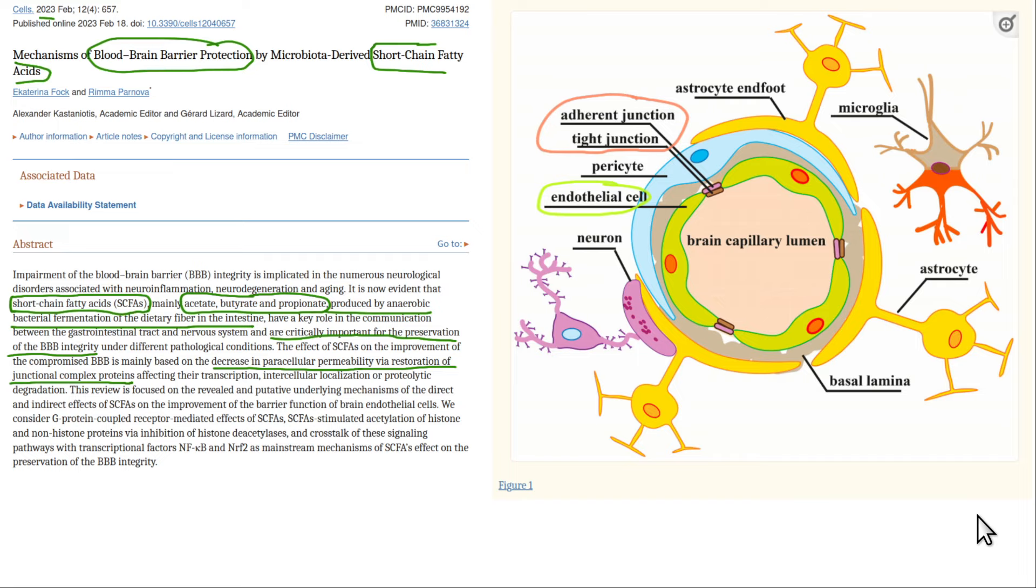And the brain has a protective blood-brain barrier that prevents toxic things that are floating around in the blood from getting into the brain substance, the brain parenchyma.